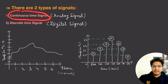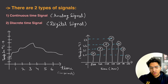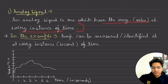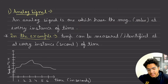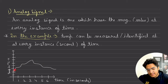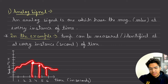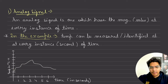This is what we call a continuous time signal or analog signal. We can retrieve a value from any instance — it is continuous. We can talk about any point and a magnitude value will exist there.